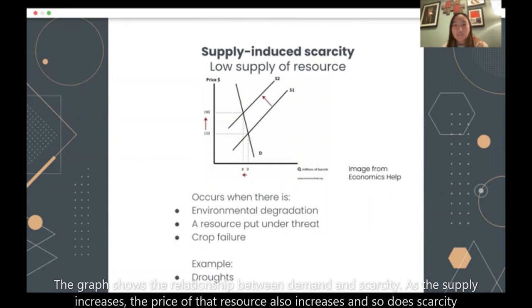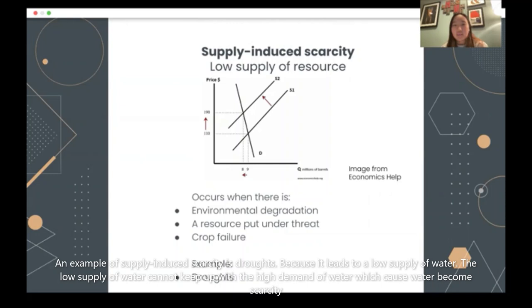An example of supply-induced scarcity is when droughts occur because it leads to a low supply of water. The low supply of water cannot keep up with the demand of water, which causes water to become a scarce resource.